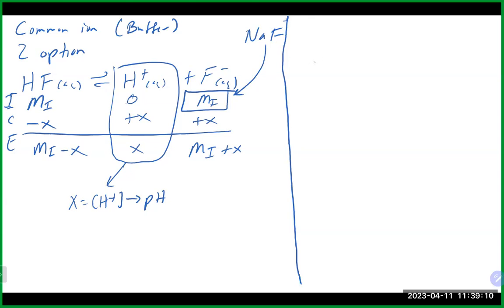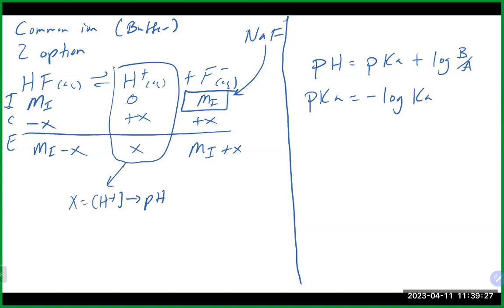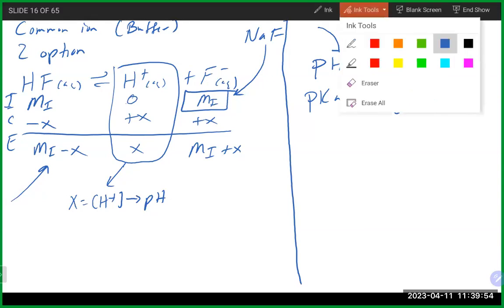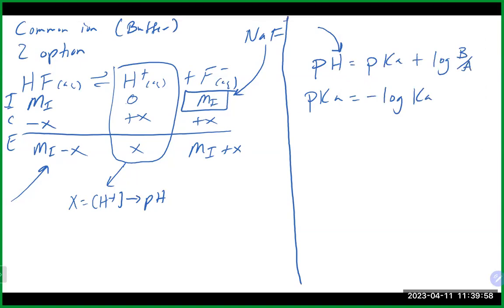The other approach is the Henderson-Hasselbalch equation: pH = pKa + log([base]/[acid]), where pKa = −log(Ka). If you recognize it is a buffer problem, you can go directly into this equation without doing an ICE table. There's also a version using pOH: pOH = pKb + log([acid]/[base]), where pKb = −log(Kb). The relationship between pKa and pKb is pKa + pKb = 14.